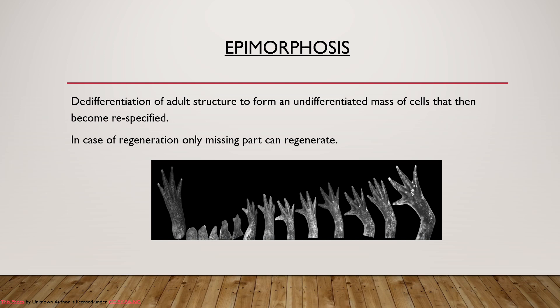Epimorphosis involves de-differentiation of adult structure to form an undifferentiated mass of cells that then become re-specified. In this, we first need to know what de-differentiation is. When any cell or mass of cells loses its specialization and becomes an unspecialized or undifferentiated mass of cells, this is known as de-differentiation. In epimorphosis, this undifferentiated mass then becomes re-specified.